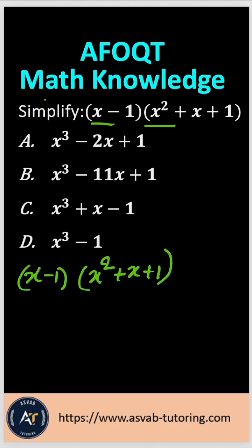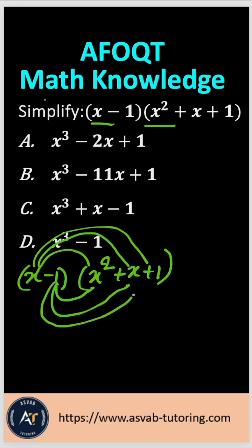What do you have to do? I have to multiply x with every single term to the right side. Let's do that. And then same way with the negative one with every single term in here. So let me rewrite that in here.